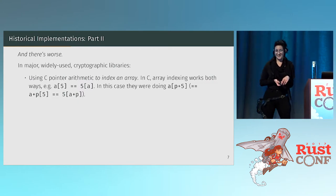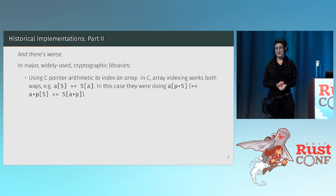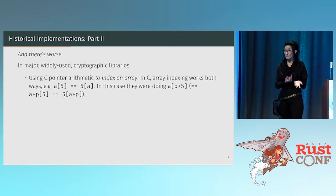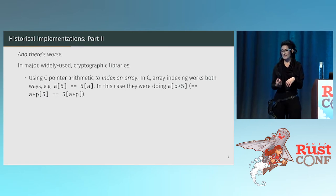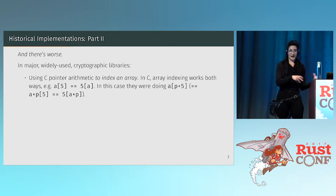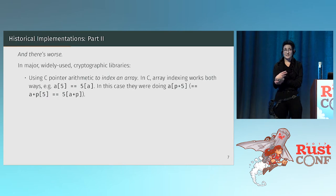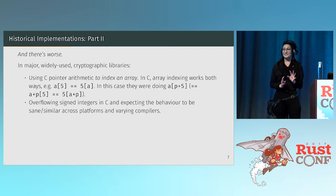And there's worse. Some of the bugs I've personally seen in major widely-used cryptographic libraries — which I won't name — include using C pointer arithmetic to index an array. In C, array indexing works both ways: taking the sixth element of array a is the same as 5[a]. So they were doing a[p+5] where p is a pointer, which equals a+p[5] and 5[a+p] — there are just so many ways that could go wrong.